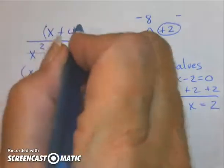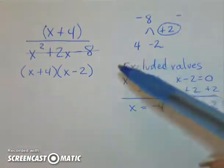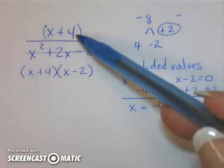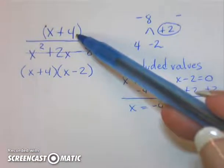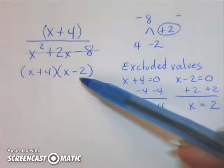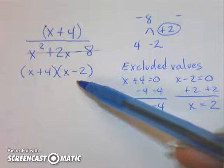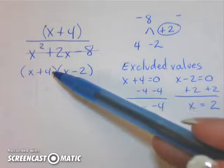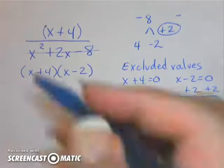When I look at this problem up here, I see that I have common factors. I have x plus 4 on top, and x plus 4 times x minus 2 on the bottom. So if I have a common factor, I can cancel them out.